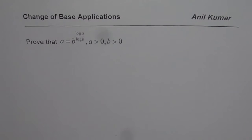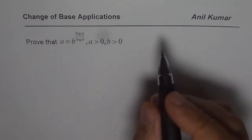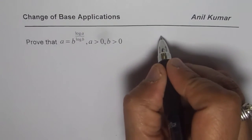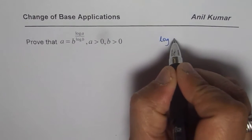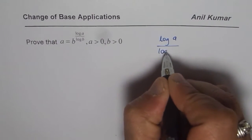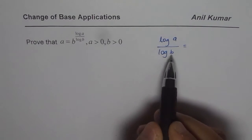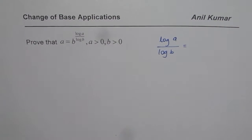You can pause the video, answer the question and then look into my suggestions. Now, let us try to solve what is log to the base 10 of A over log to the base 10 of B. Let's first solve that and then we can substitute that as an exponent of B and see what we get.